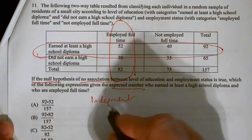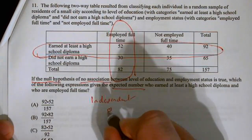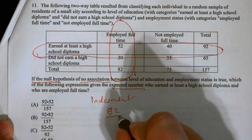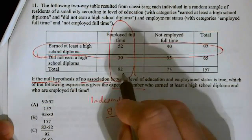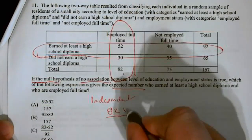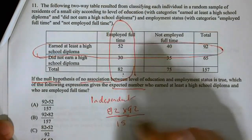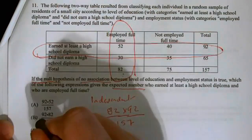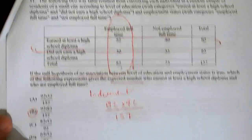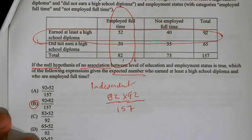Well, if we're pretending they're independent, it's basically 82 times 92 divided by the total. So, in that case, it's B. So, number 11 should be B.